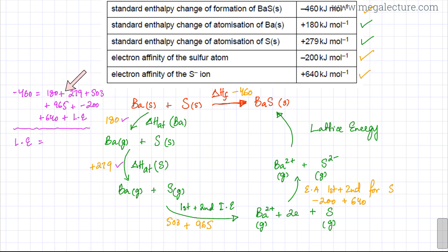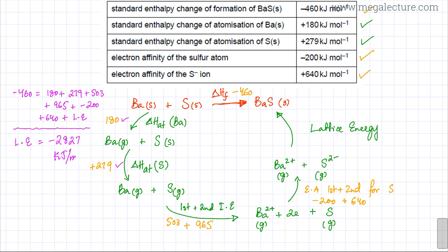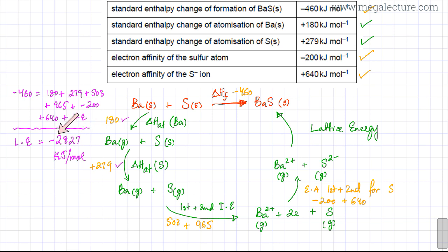Be very careful with the signs and all the calculations — a lot of people make mistakes here. Solving for lattice enthalpy gives a value of −2827 kJ/mol. One way to check whether the answer is logically correct: lattice enthalpy is always exothermic, so you must always get a negative sign. If you get a positive sign, something went wrong with the calculation.